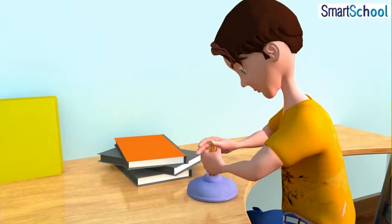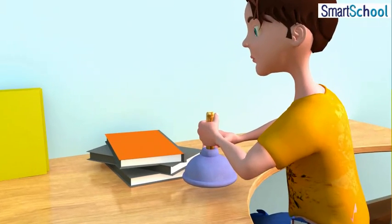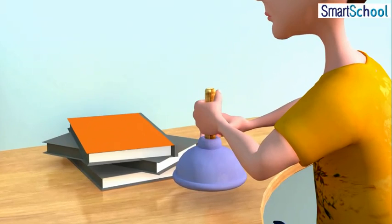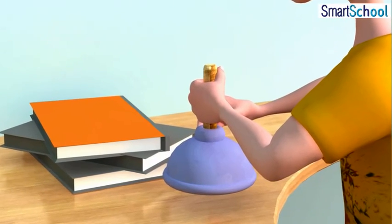To pull the sucker off the surface, the applied force should be large enough to overcome the atmospheric pressure. This activity might give you an idea about the magnitude of atmospheric pressure.